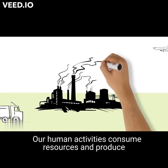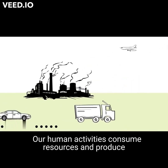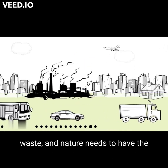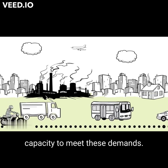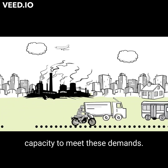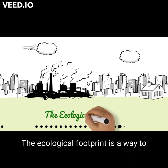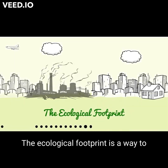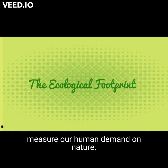Our human activities consume resources and produce waste, and nature needs to have the capacity to meet these demands. The ecological footprint is a way to measure our human demand on nature.